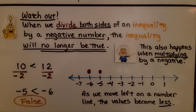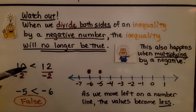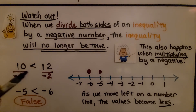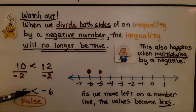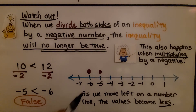But watch out. When we divide both sides of an inequality by a negative number, the inequality will no longer be true. This also happens when multiplying by a negative. If we have positive 10 is less than positive 12 — which is true — and we divide both sides by negative 2, we get negative 5 is less than negative 6, and that's false. Negative 5 is closer to 0, so it's greater. As we move left on a number line, the values become less, so negative 6 is less than negative 5 — this is false.